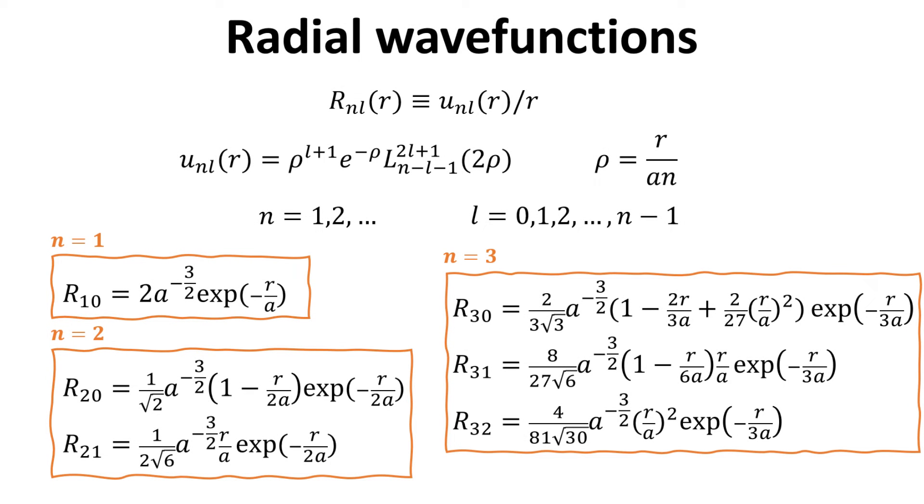The radial wavefunctions R can be obtained from the function U. We list here the radial functions associated with the first, second, and third energy levels, denoted by n equals 1, 2, and 3, as shown.